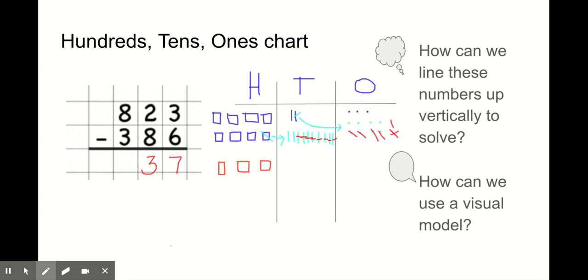Finally, I need to take my hundreds away. Can I do that? I sure can. I can take 3 away. 1, 2, 3. How many blocks do I have without a line through it? 4. So my answer is 437.